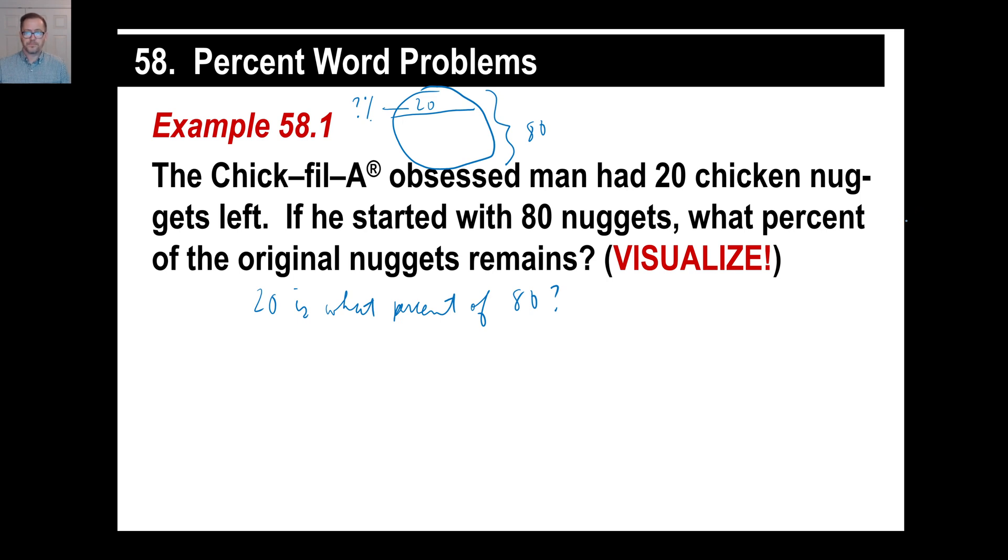The first way is this. You're taking this little paragraph and turning it into a little English question first. Then you're going to turn that question into an algebraic equation. That sounds like a lot of work but you'll get used to it very quickly. The question you're asking first is this: 20 is what percent of 80? That is the question you're asking.